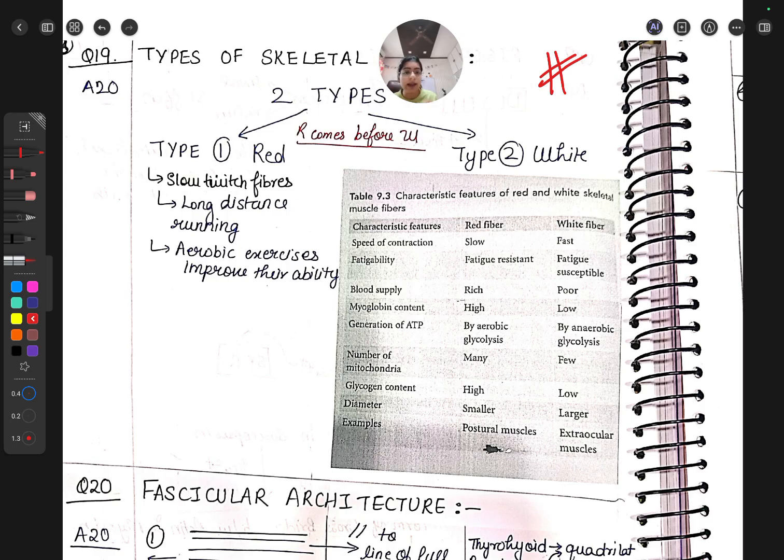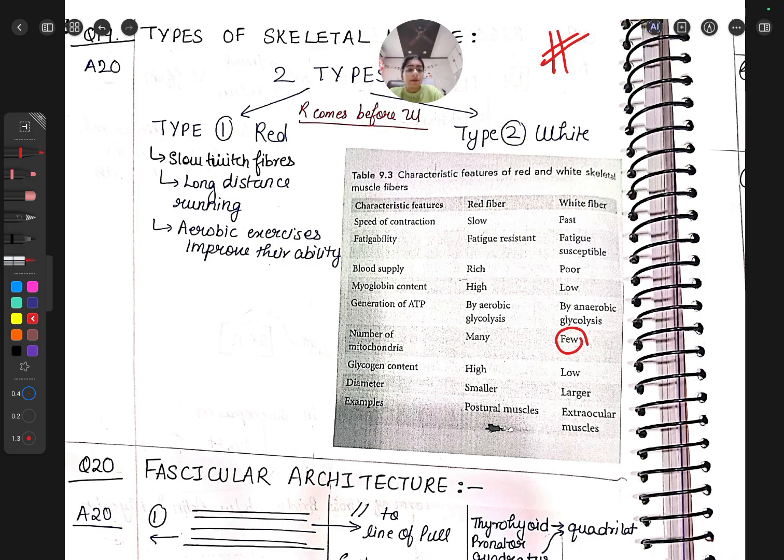White fibers are fast, and if we run fast we get fatigue, so they're fatigue susceptible. They have poor blood supply, low myoglobin content - used for short duration, no energy reserve needed. There's anaerobic glycolysis, not aerobic. Number of mitochondria is few, glycogen content is low, diameter is large. Examples: extraocular muscles of eye can blink fast. Postural muscles are red because I sit for long without fatigue.